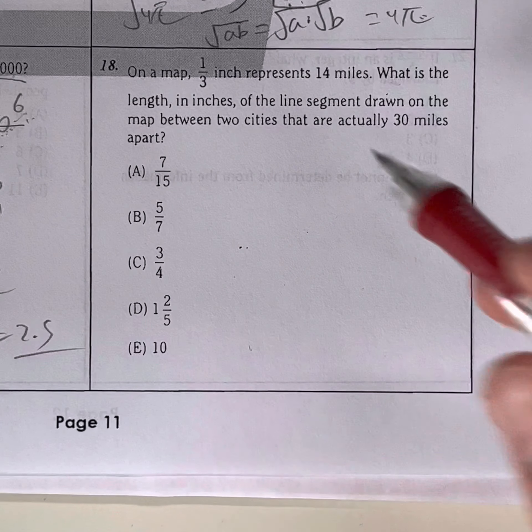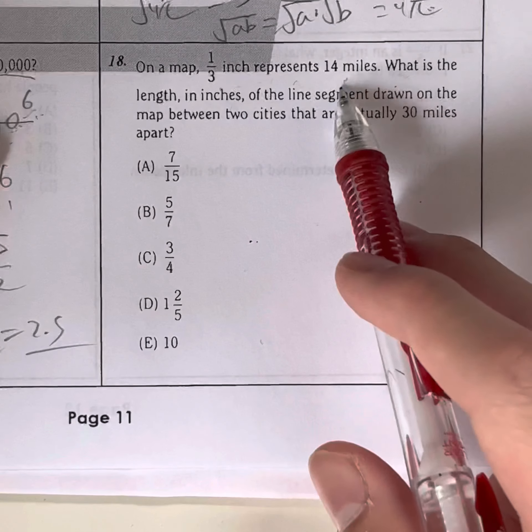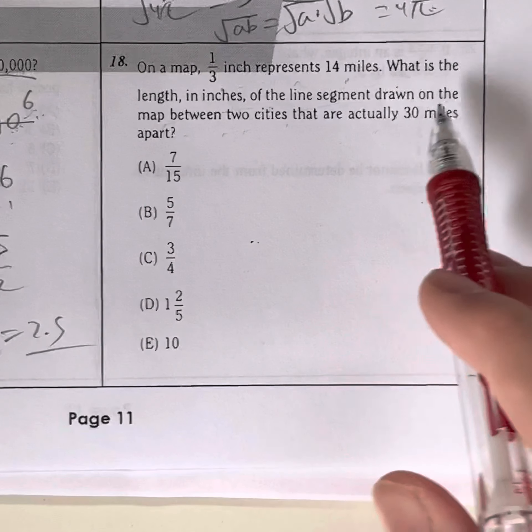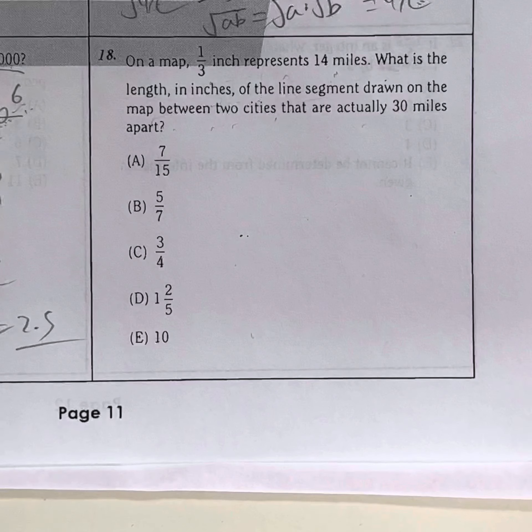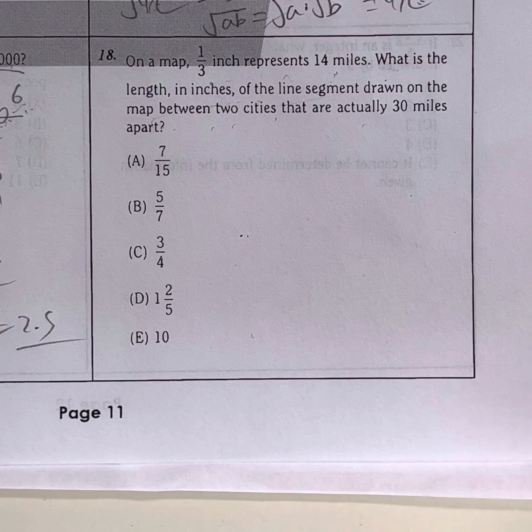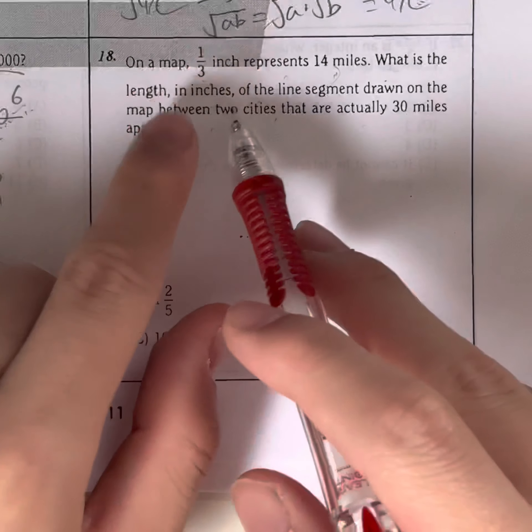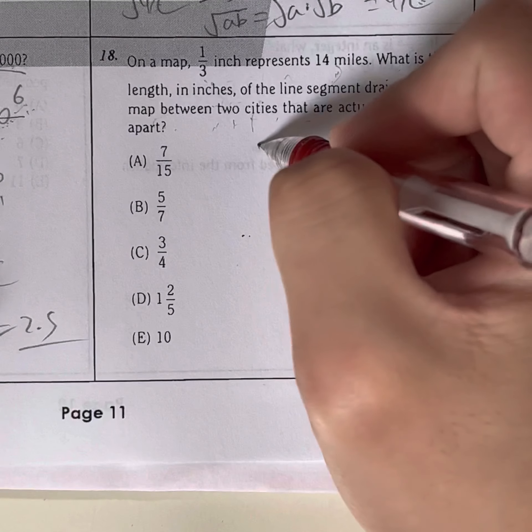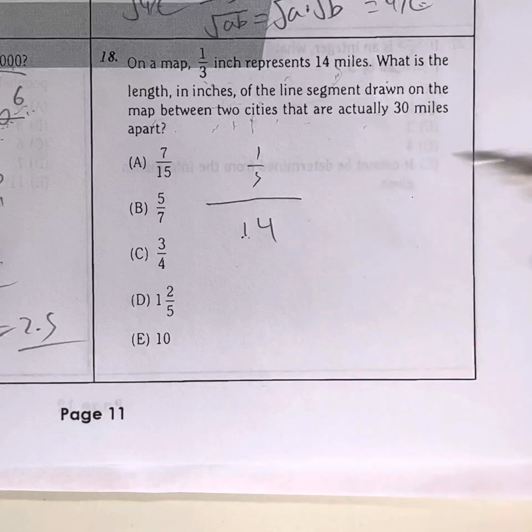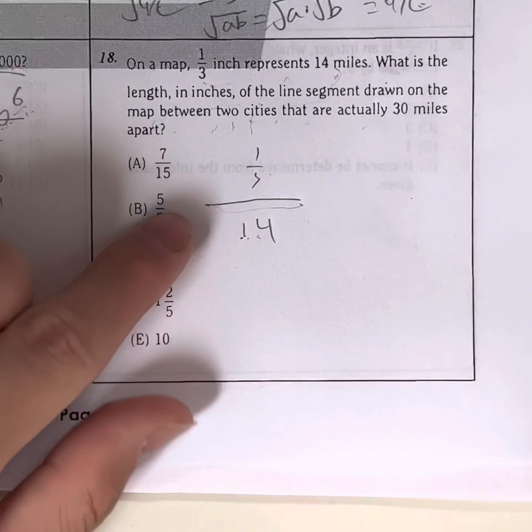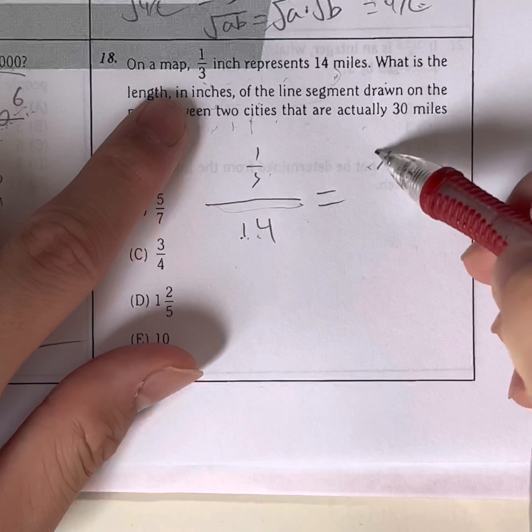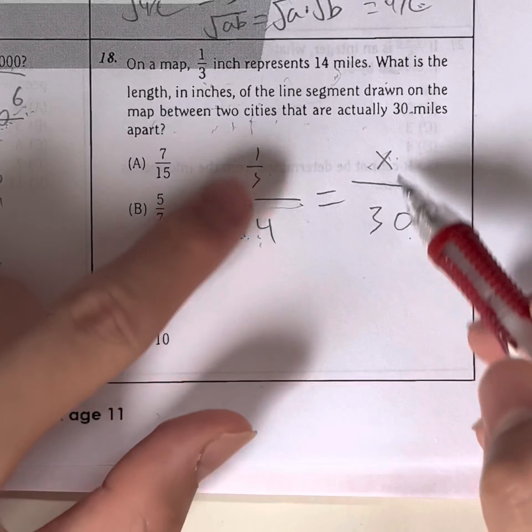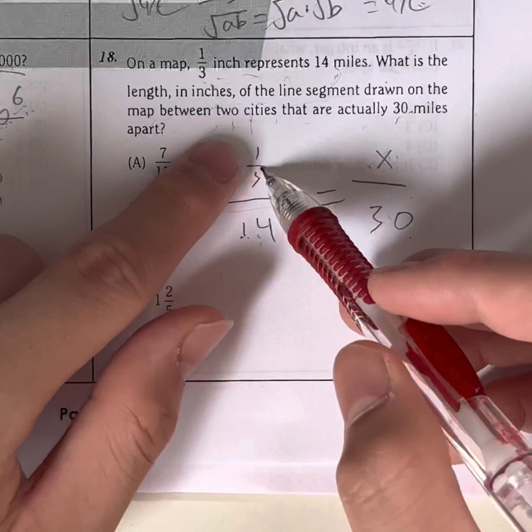Question 18. On a map, one-third of an inch represents 14 miles. What is the length in inches of the line segment drawn on the map between two cities that are actually 30 miles apart? So how do we do this question? This is more of a proportion question, because as you can see, something represents something, and we're trying to find that relationship between something and 30 miles. So let's just set up the proportion. So one-third of an inch represents 14, right? It's in the same fraction, big fraction, and that's equal to some inches over 30 miles. The miles are on the bottom, and the inches are on the top, and it's with each respective value. One-third to 14, x to 30.